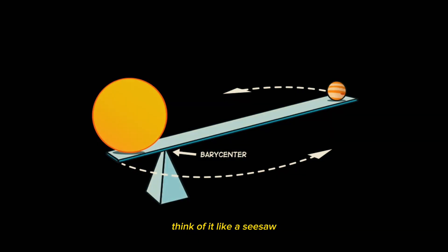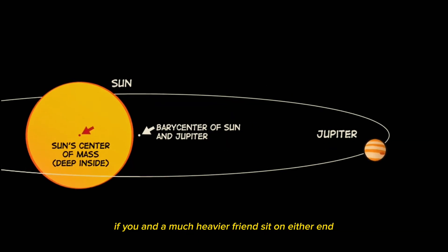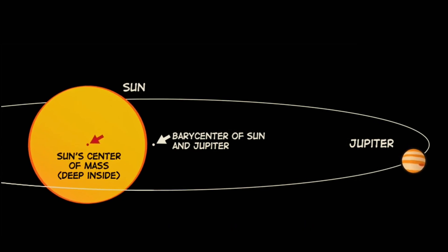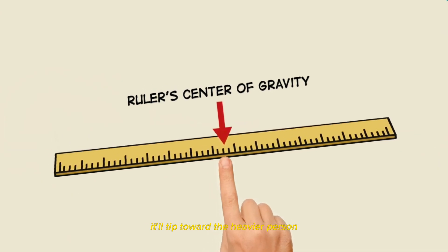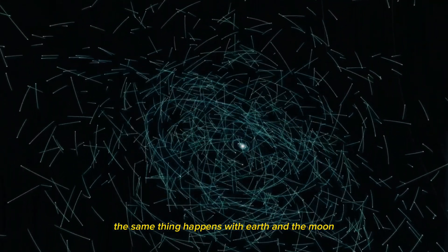Think of it like a seesaw. If you and a much heavier friend sit on either end, the seesaw won't balance in the middle. It'll tip toward the heavier person. The same thing happens with Earth and the Moon.